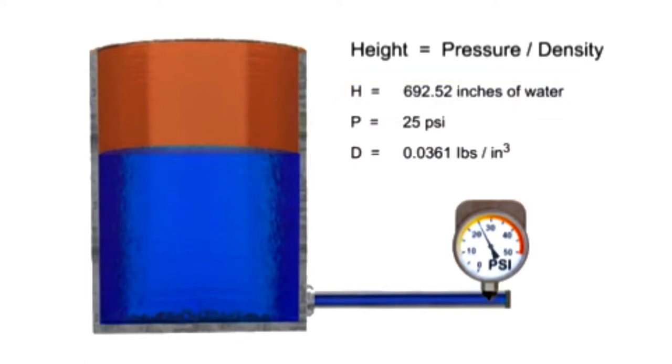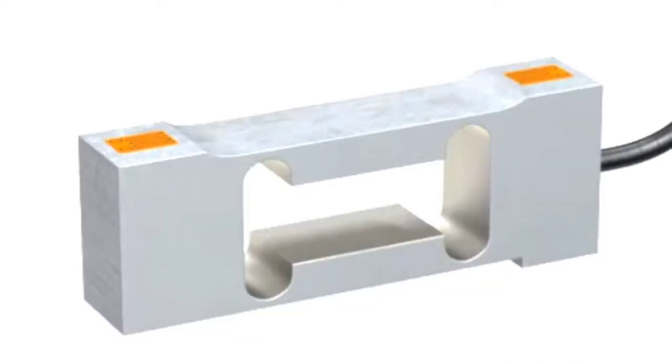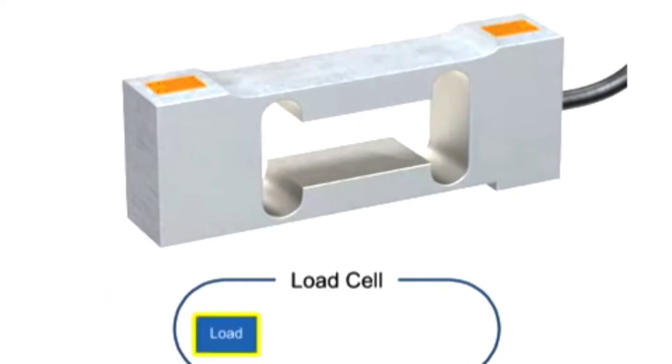Another method of calculating the level of material in a vessel by weight is using load cells. Load cells are comprised of a strain gauge bonded to a support and convert a force or load to an electrical signal.